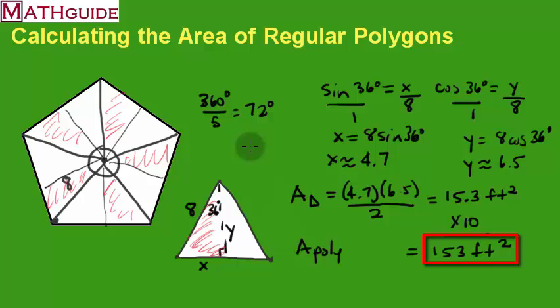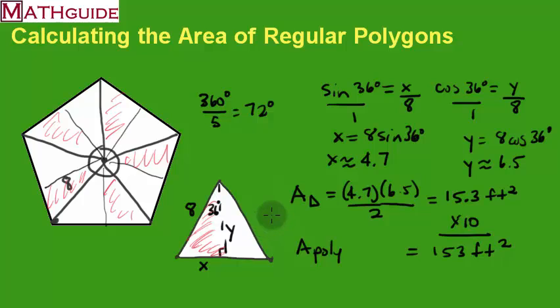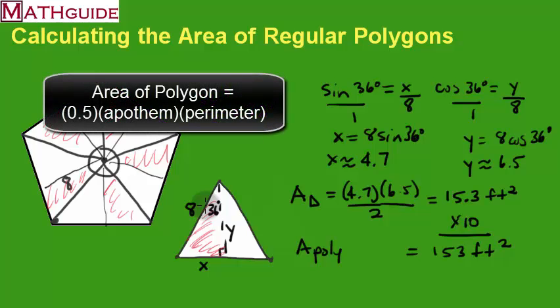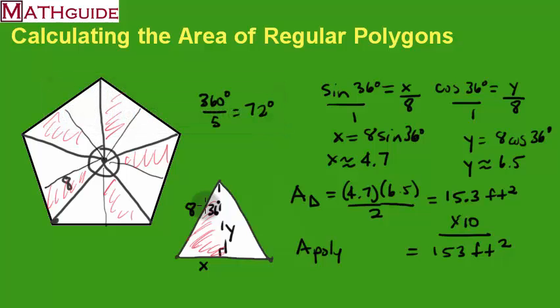It's a fairly routine, simple process. This second example was a bit more complicated because we couldn't use isosceles triangle relationships. There's another formula — half the apothem times the perimeter — but it's a 'magic formula' where you don't know where things come from. This approach uses basic trig, the area of a triangle, and common sense. Don't use formulas plucked from nowhere — understand where they come from. Make sure to visit MathGuide.com for other instructional videos, interactive quizzes, and text lessons.